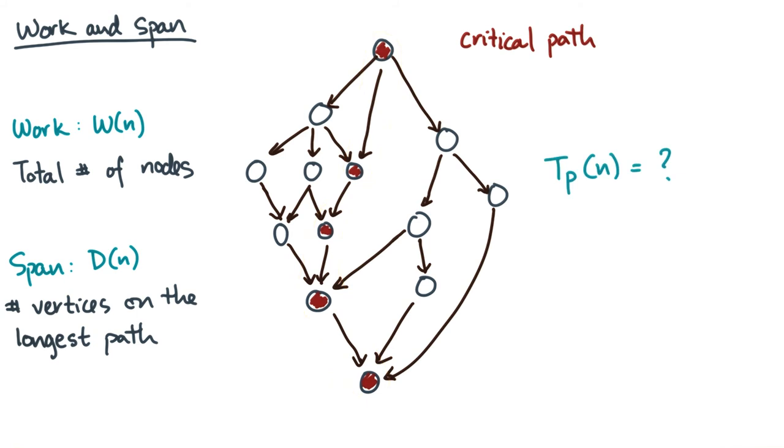So in terms of work and span, can we now say something about the time to execute the DAG on a PRAM with P processors? Here are some simple things we can say. First, if all the operations have unit cost, then the time to execute this DAG using only one processor should be exactly the work, W of n.